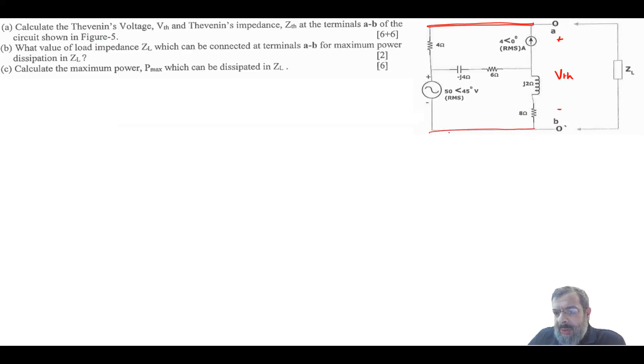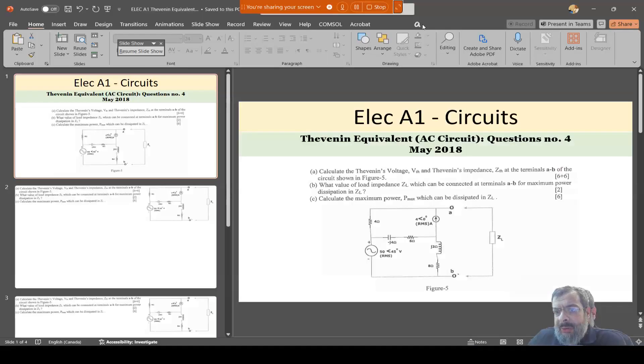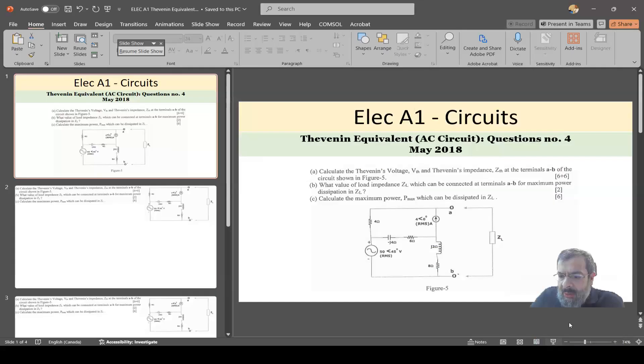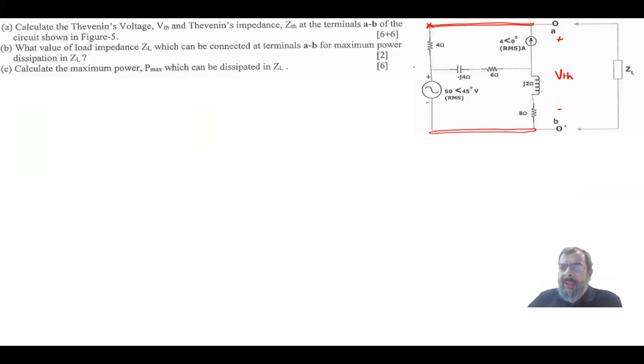And this is also one node. So the voltage between A and B is the same as, so this is also basically here, this is also A, this is A, and this is B. So the voltage that I'd like to calculate is exactly the same as this voltage across the 4 ohm and the source. So the voltage from here to here is the same as this V Thevenin.